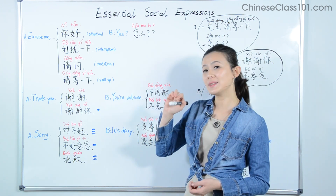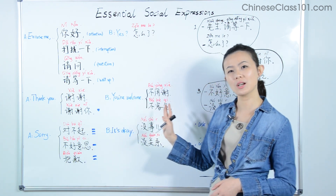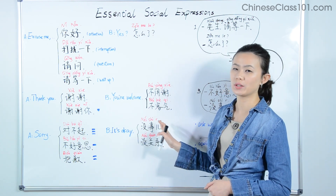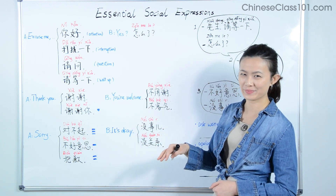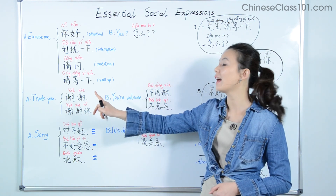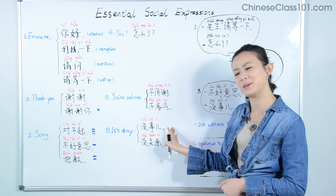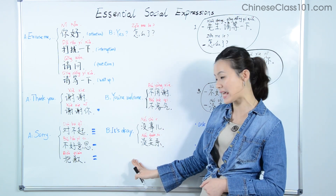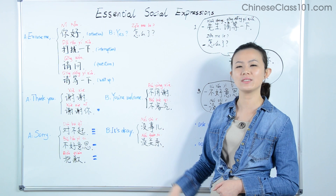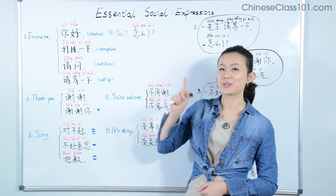If someone says sorry to you and you want to assure them it's okay, there are a couple of ways to respond. First is 没事, which literally means 'no issue' or 'no big deal — don't worry about it.' 没事 can also be used to respond to 'thank you,' like saying 'no problem.' Another way to say 'it's okay' is 没关系, meaning 'it doesn't matter — no worries.'